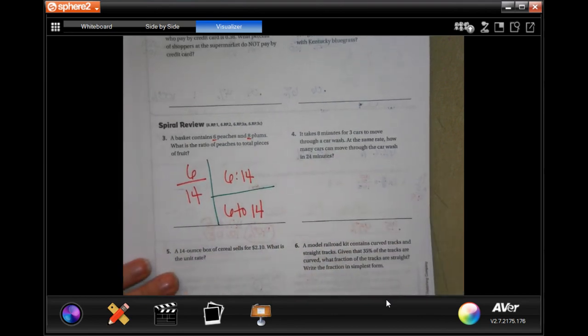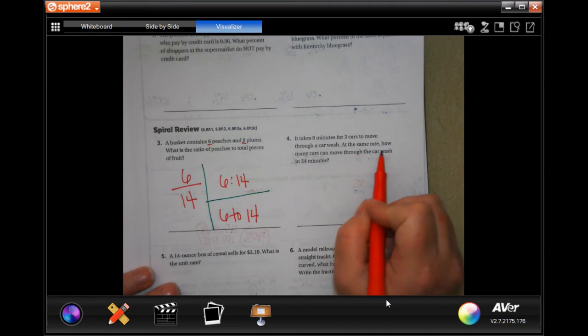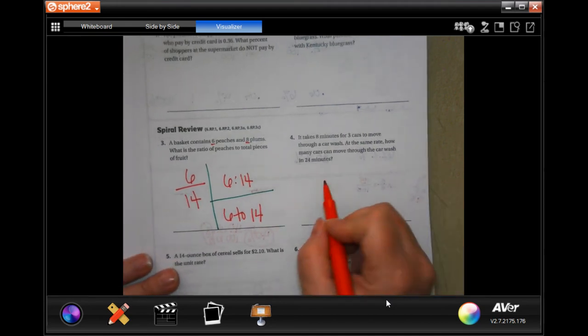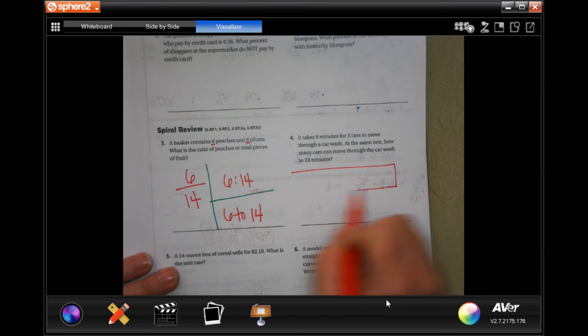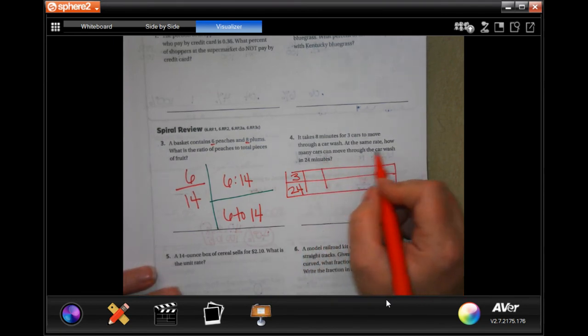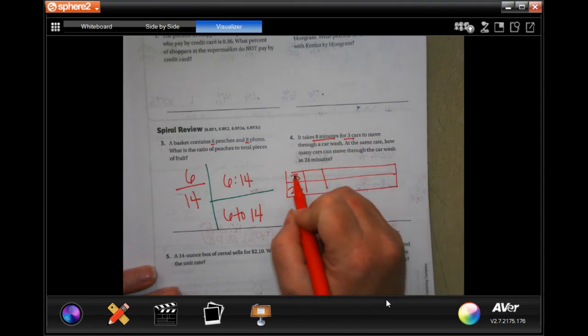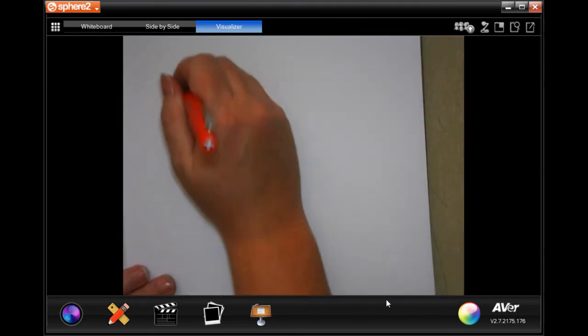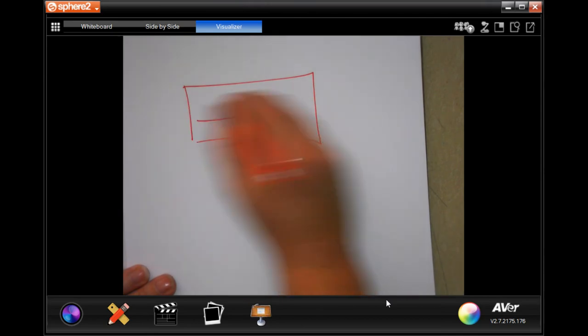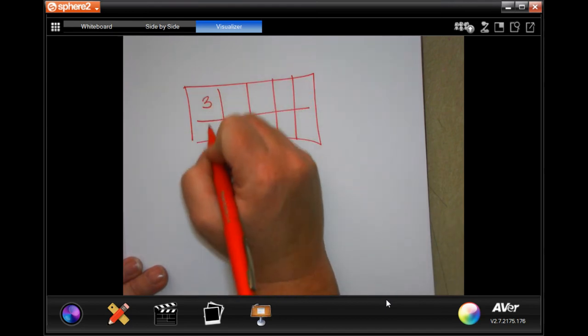So, now we're going to go over number 4. It says it takes 8 minutes for 3 cars to move through a car wash. At the same rate, how many cars can move through the car wash in 24 minutes? So, 3 to 24. So, we want to know 8 minutes, 3 cars. Uh-oh. I did this wrong.